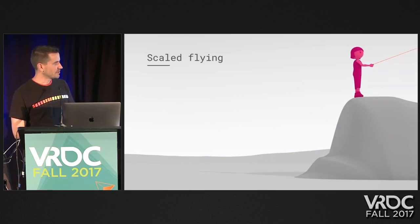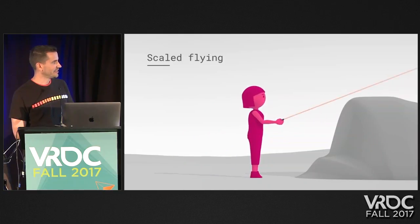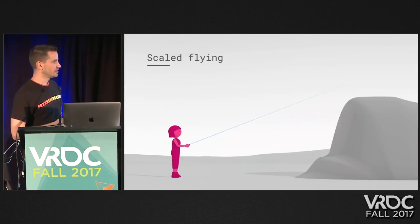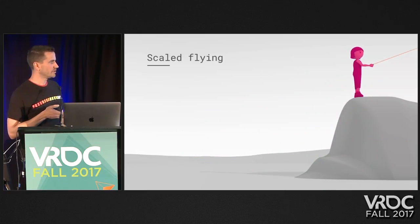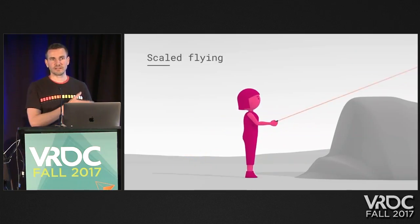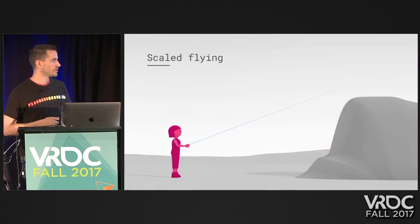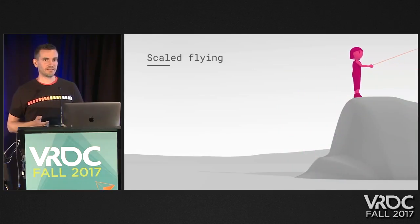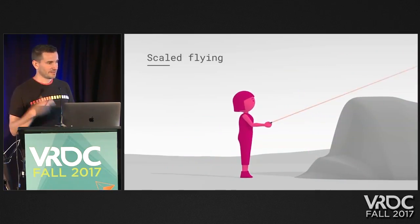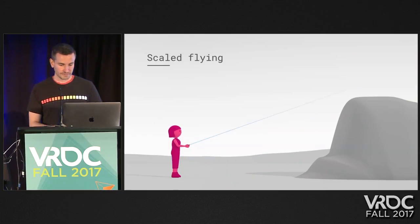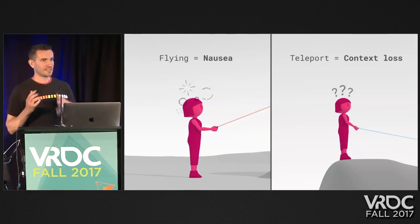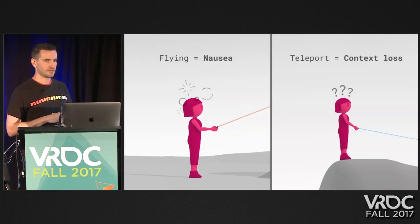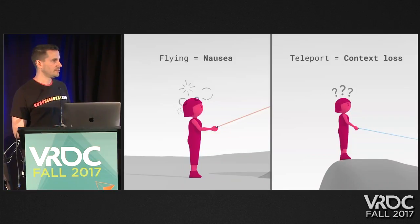Then we tried another thing we knew we weren't supposed to do: flying the user. Instead of stepped motion, it's continuous motion, and we kept their feet on the ground during this. It worked the best for preserving immersion — people didn't lose context, and whenever they stopped, their feet were on the ground. But there was one big problem: it made 95% of people sick, because what they see and what their body feels doesn't match.